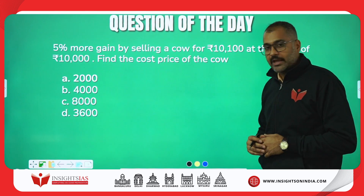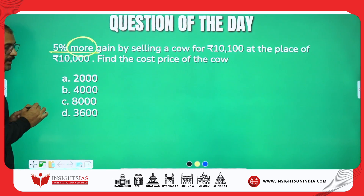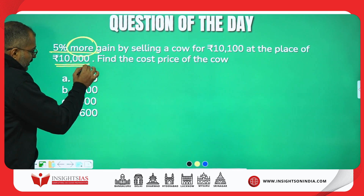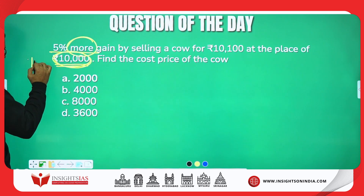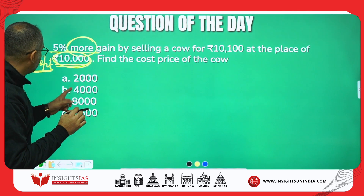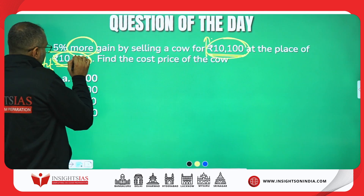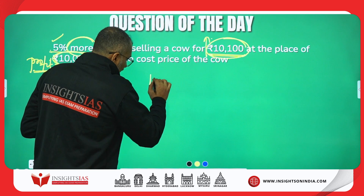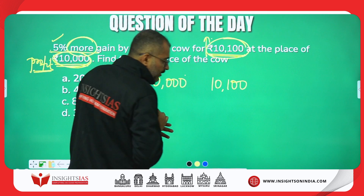And this is the question of today. It says 5% more gain. Read the question properly — it is not gain, it is more gain. By selling a cow for 10,100 instead of 10,000. The meaning of which is: when he was selling it at 10,000, he is already making profit. Rather than selling at 10,000, if he sells at 10,100, there is more profit. In terms of percentage, it is 5% more. At 10,000 only, if you are making profit, definitely when you sell it at 10,100, you will earn more profit.